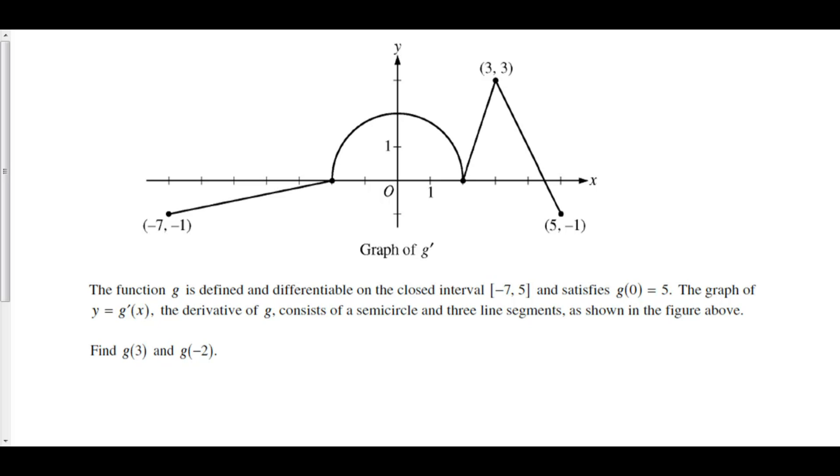Find g of 3 and g of negative 2. In this problem, we are asked to go from g prime to g. That means that we have to take an antiderivative or we have to take an integral.